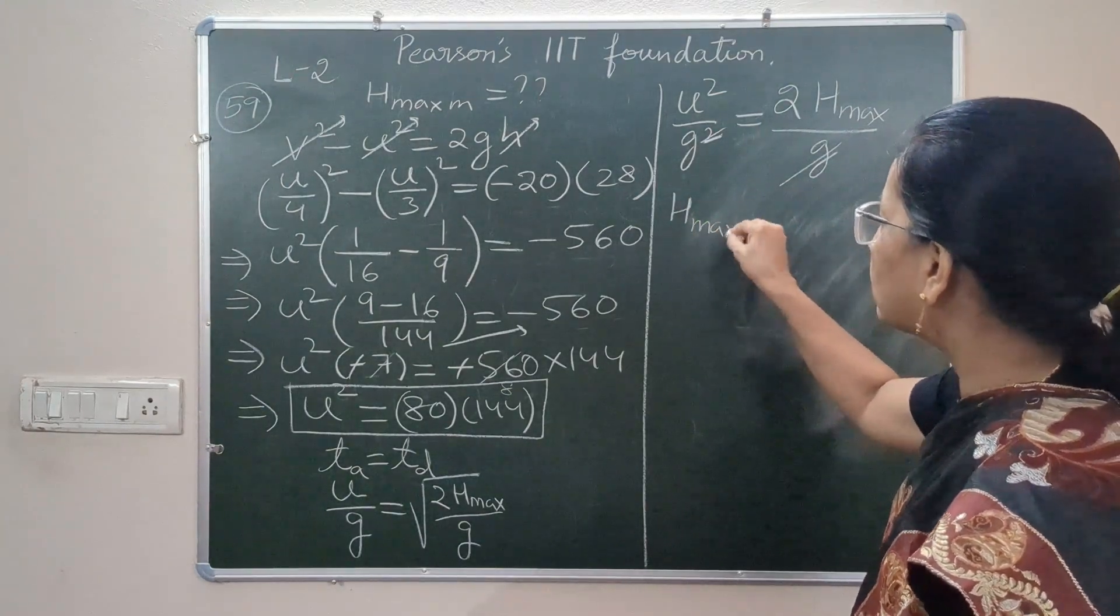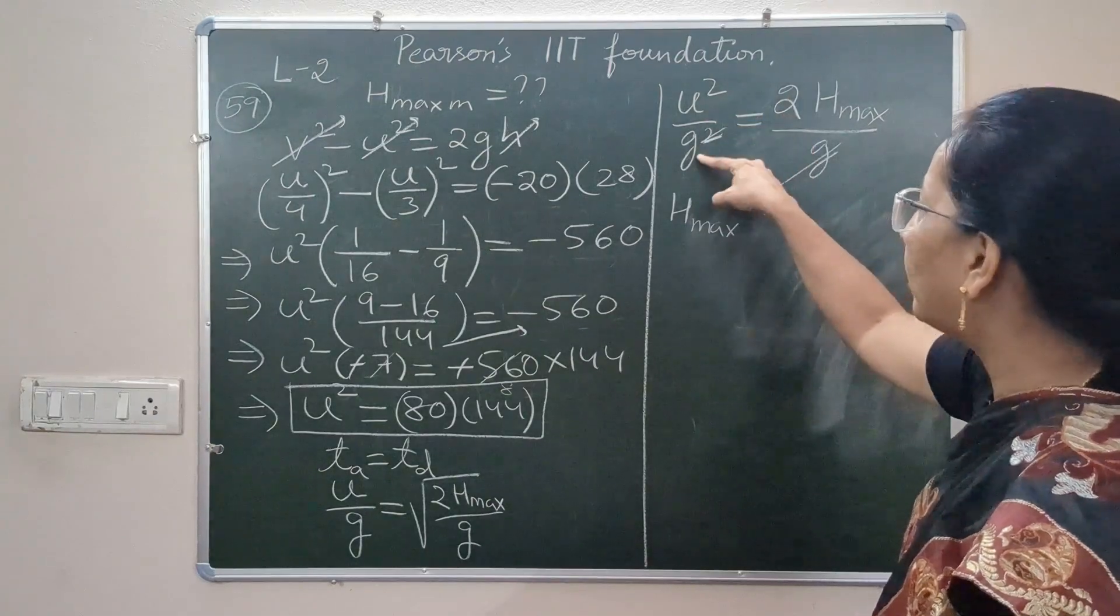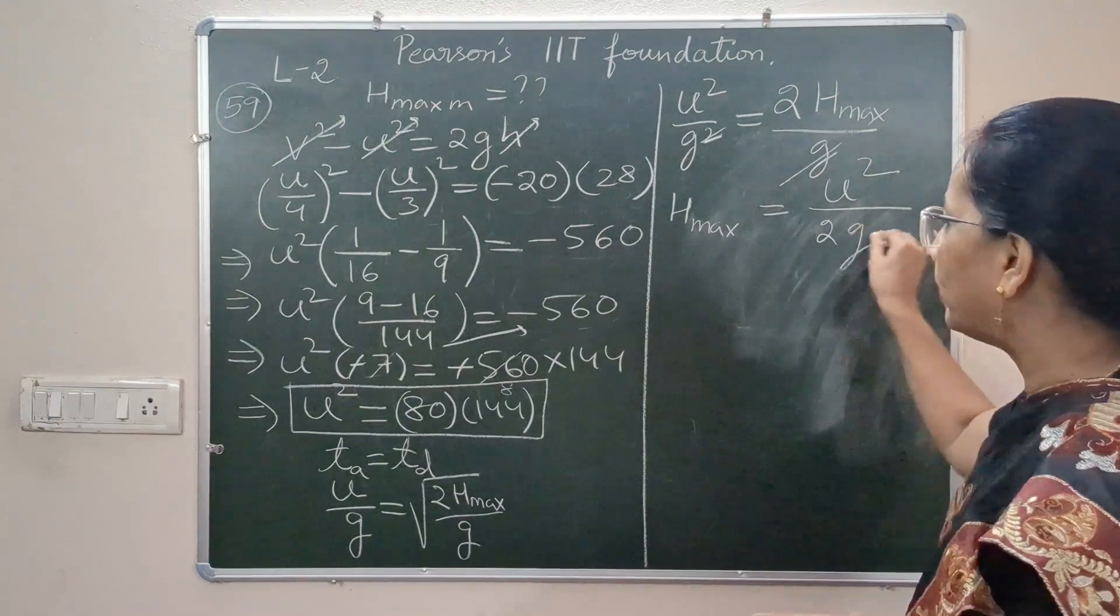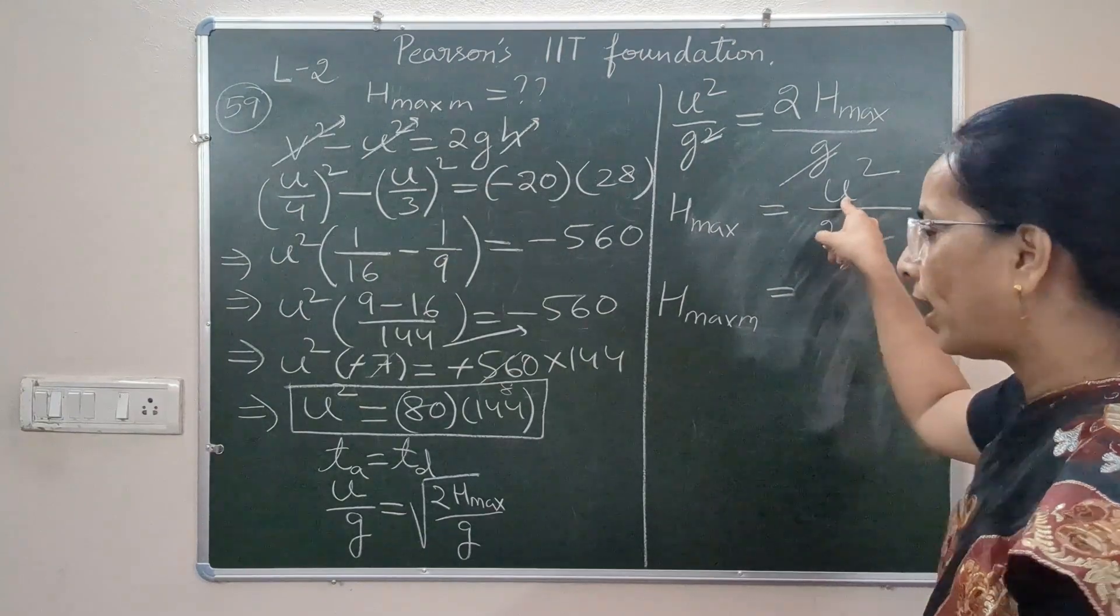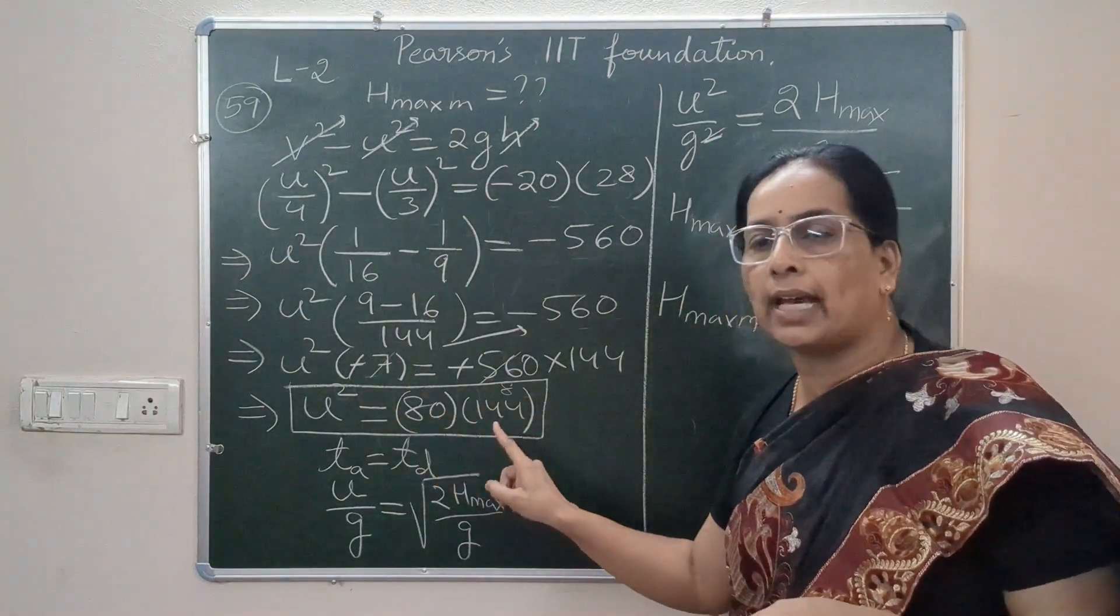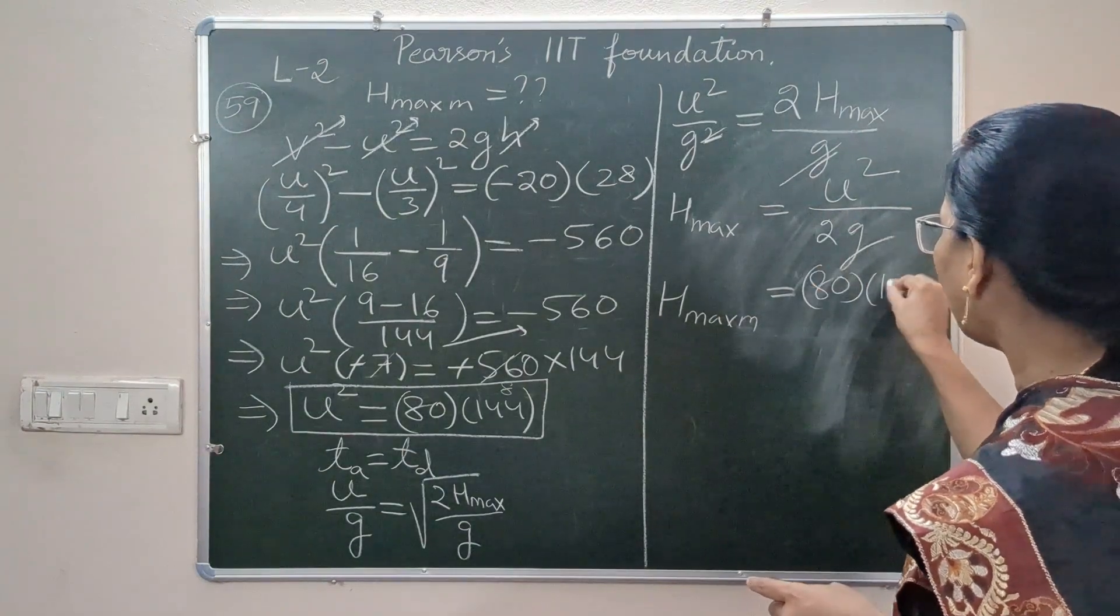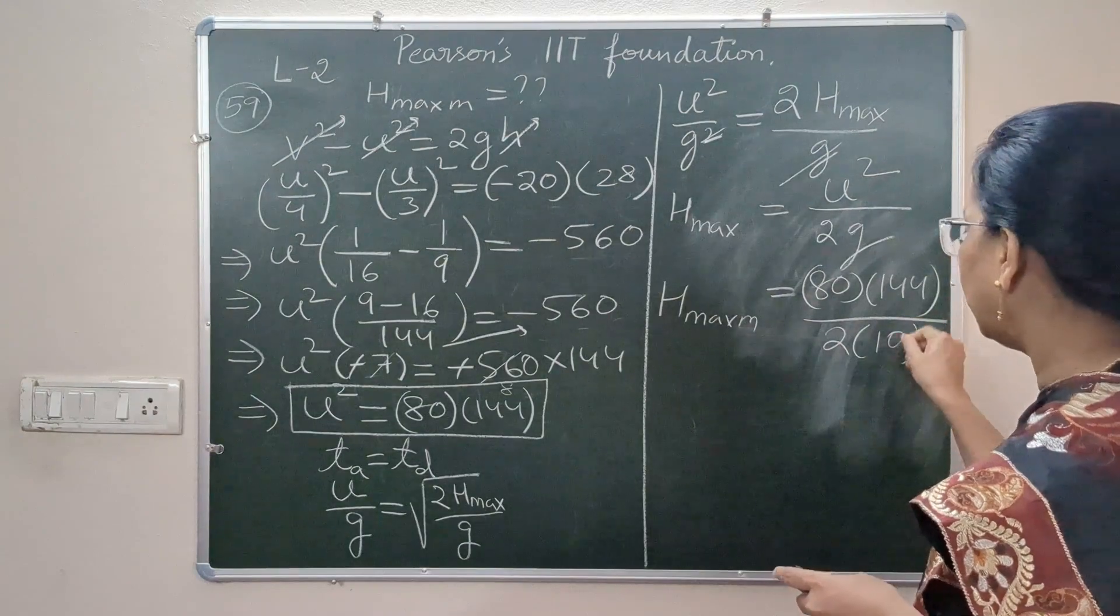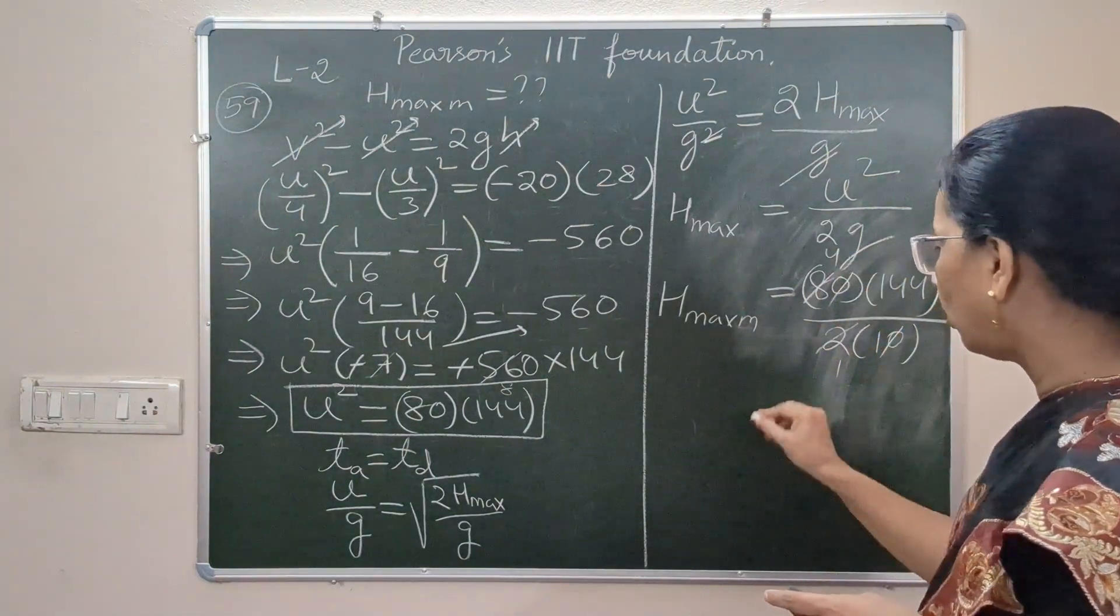h_max is u² divided by 2 times g, so u²/(2g). So h_max which is our requirement is u², and u² is 80 times 144. So 80 times 144 divided by twice of 10. You can cancel this and we can have one more round of cancellation here also.